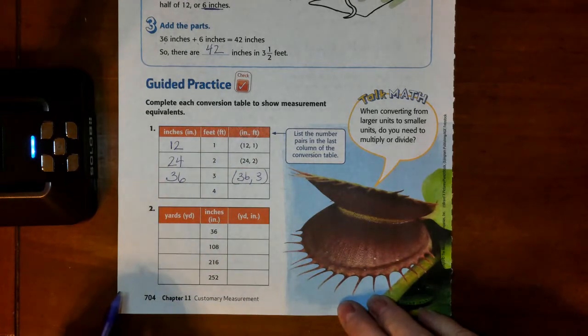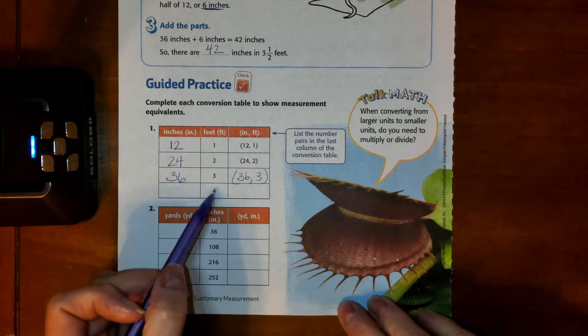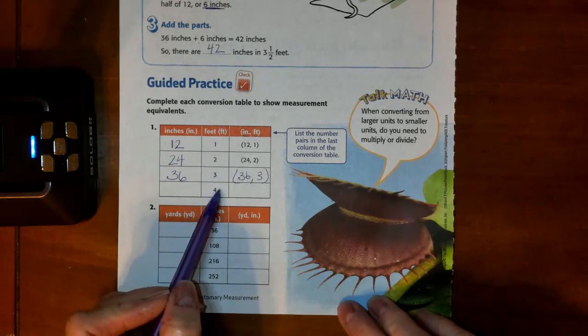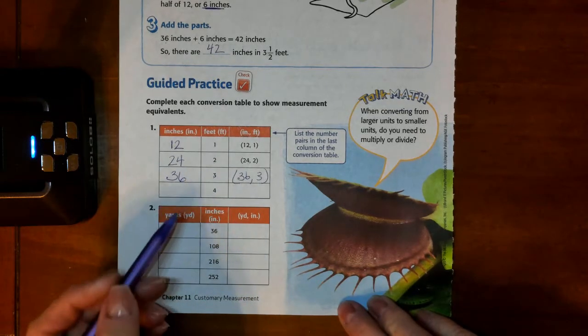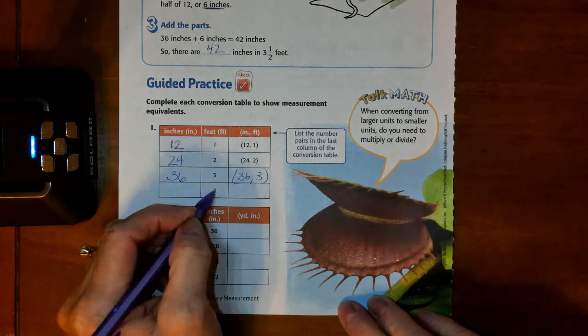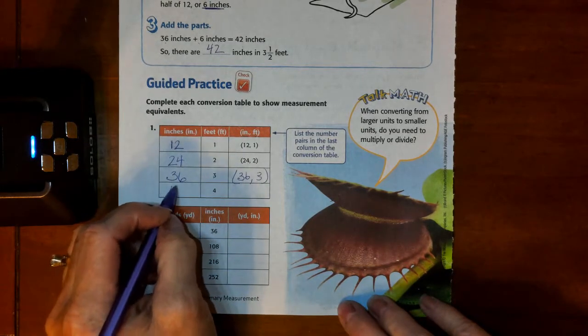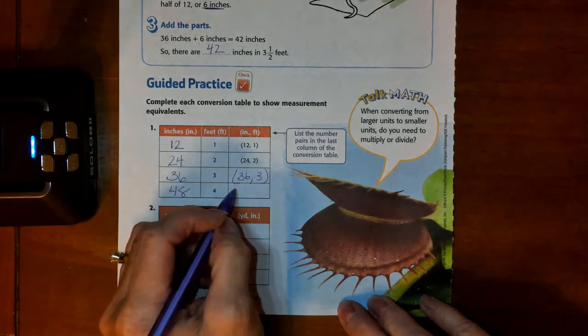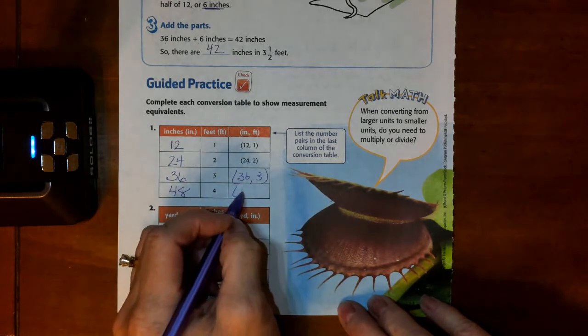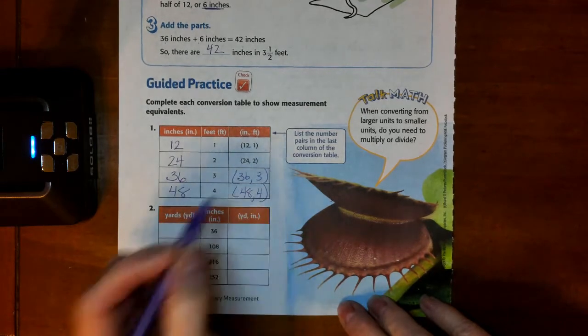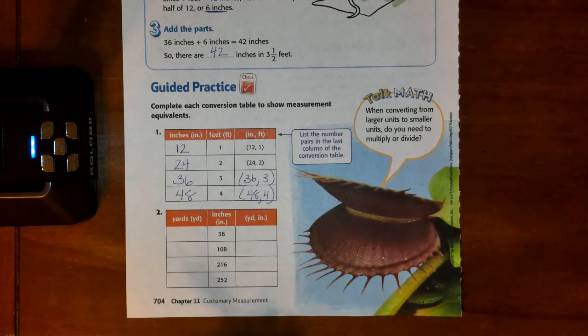And we're going to put parentheses around them. The last box tells us that we have 4 feet and 4 feet in inches is 4 times 12, which is 48. So, then we'll list it over here, 48 and 4. All right. Now you do number 2.